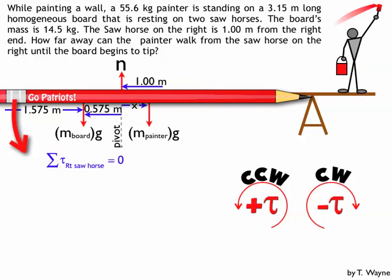So counterclockwise means a positive torque. So where I press, the weight of the board times the distance to the pivot point, that torque is going to be a positive torque. So zero is equal to a positive torque of mg, the weight of the board, times the distance to that location.